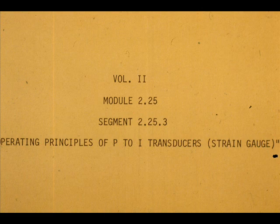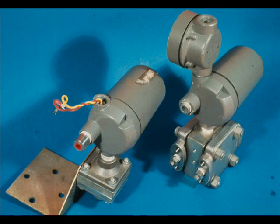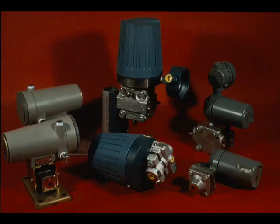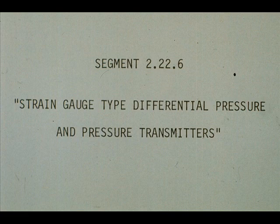Strain gauge fundamentals are included elsewhere in Volume 2 and will not be discussed in this module. However, a specific strain gauge type differential pressure and process pressure transmitter will be studied. This module will be concerned with the fundamental design of the motion and force balance types and with a specific example of all three types, including the strain gauge. All instructions for the specific strain gauge models will be included in segment number six of this module.